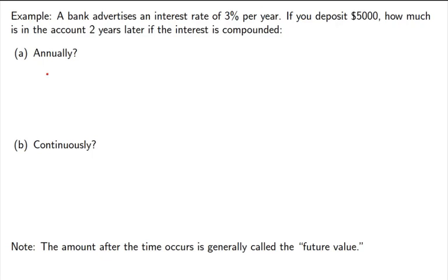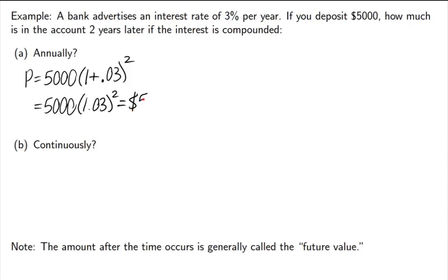If we're depositing the money annually, the formula again is P equals P0, which is $5,000, and then 1 plus the interest rate, which we'll write as a decimal, to the number of years. To put this in our calculator, we're just going to add it up first and see what we get. When I do this, I get $5,304.50.